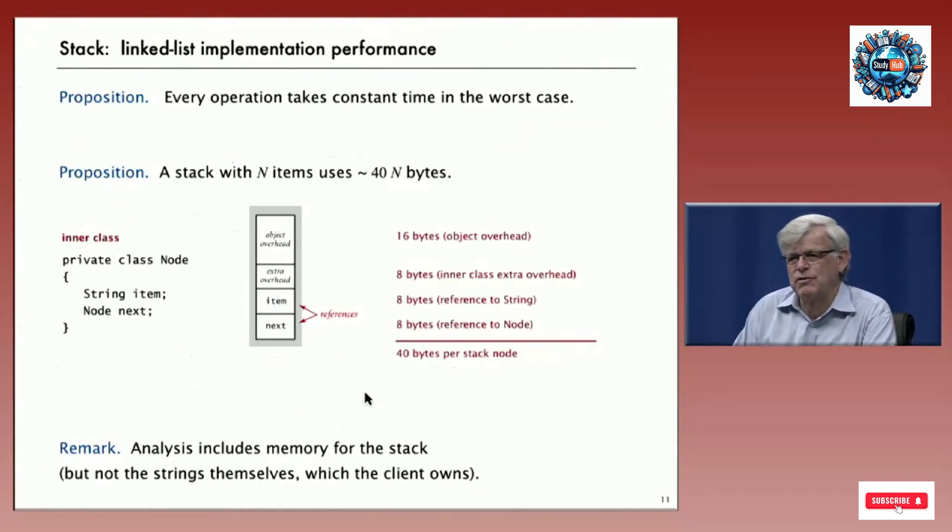How about space usage? Well, that depends very much on the implementation and the machine. This is a typical Java implementation that we do the analysis for and can test out for different types of environments. In Java, for an inner class, for every object there's 16 bytes of overhead. There's some extra overhead, 8 bytes because it's an inner class. Then there's two references in our class Node: one to a string and another one to a node, and those are each 8 bytes. So we have 40 bytes per stack node. If we have a stack of size N, we have about 40N bytes. This does not include the space for the strings themselves, which are owned by the client. But with that, we can properly assess the resource usage of this implementation for different client programs.